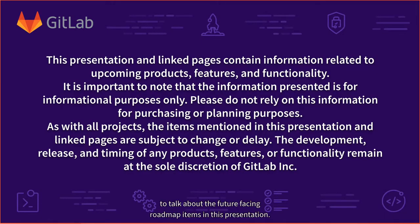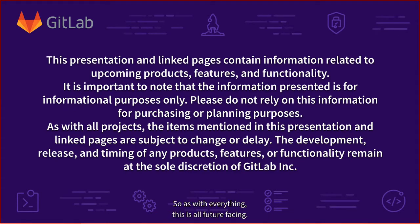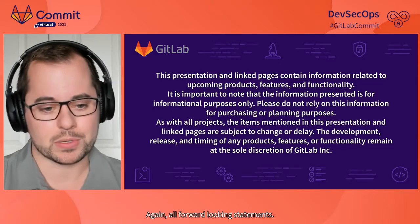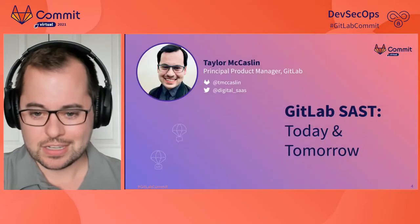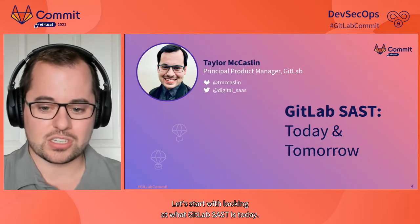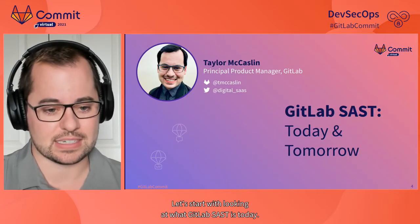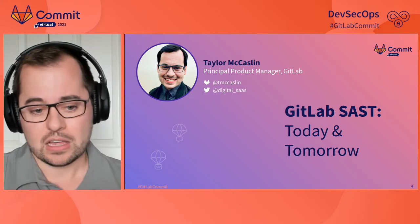Our first point: we are going to talk about future-facing roadmap items in this presentation. As with everything, this is all forward-looking — things may change, plans may change — so don't use this for any purchasing or planning decisions. All forward-looking statements. Let's dive in and start with looking at what GitLab SAST is today, take a look at where we're going in the future, and then talk about the Semgrep application itself.